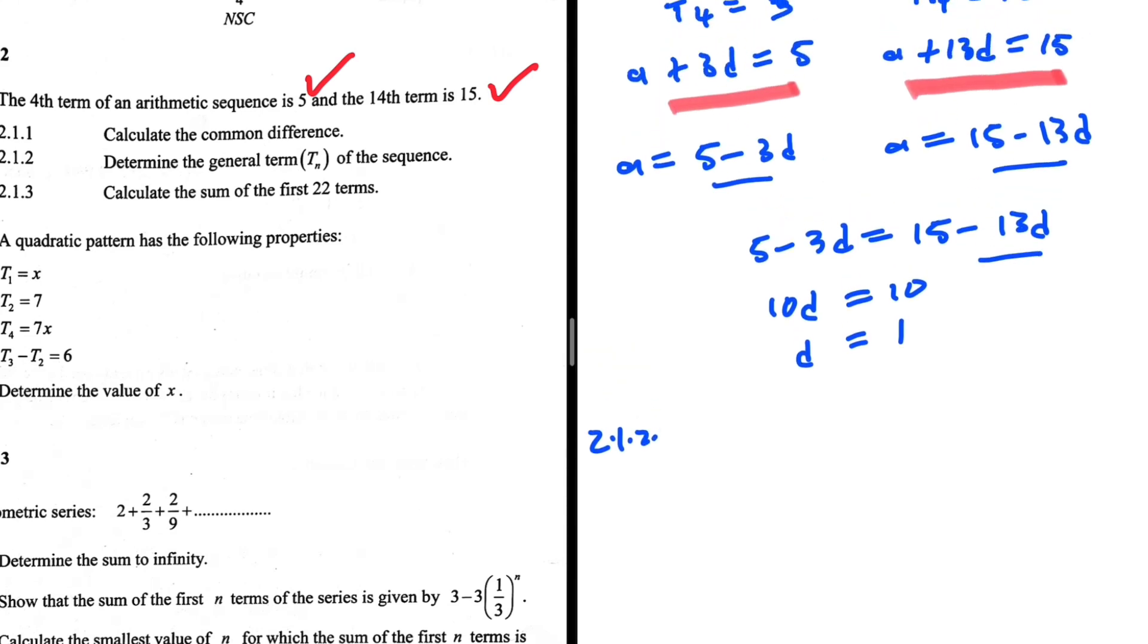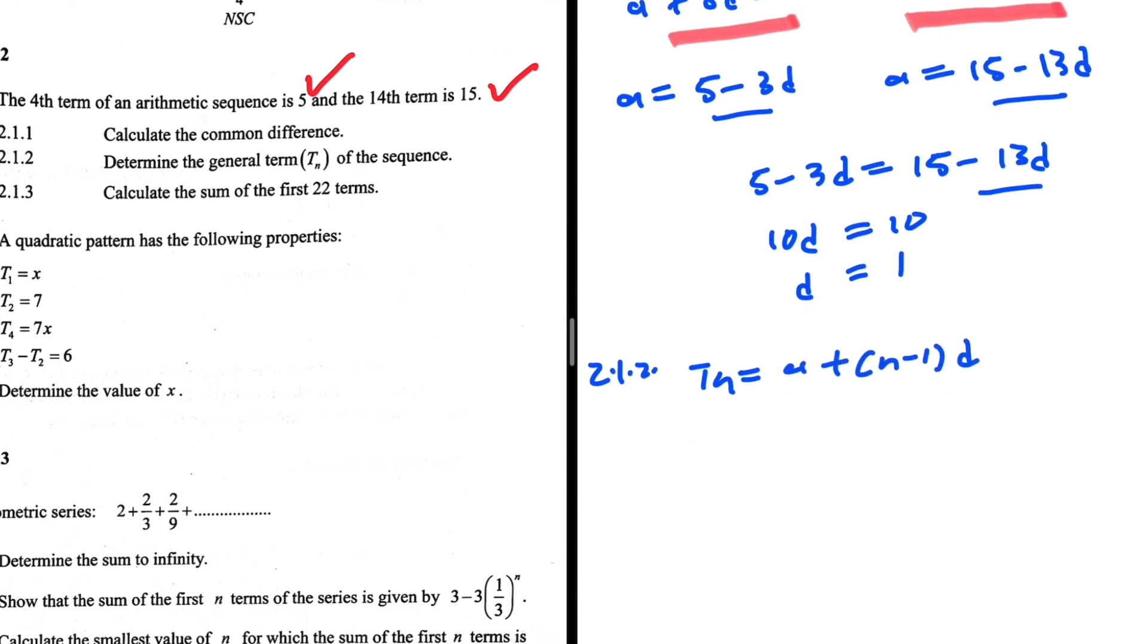Let's take a look at 2.1.2: Determine the general term of the sequence. So tn equals a plus (n minus 1) multiplied by d. We have a and d as variables that we need to figure out. We know fully well that d equals 1, but what is a equal to? We just need to substitute d into either this equation or this one here.